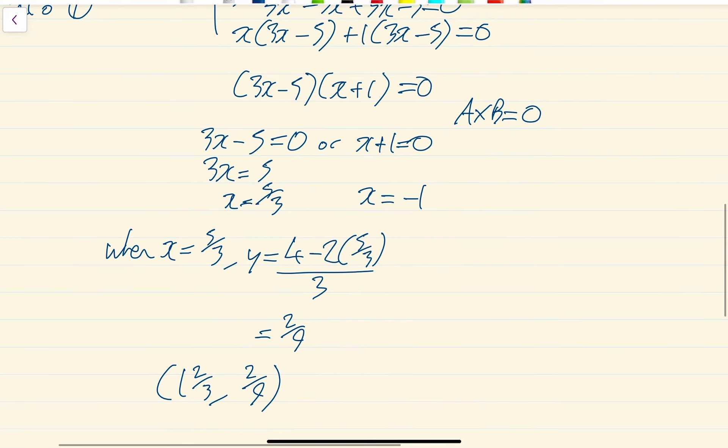And then the other one was when x equals minus 1, y is going to be equal to 4 minus 2 times minus 1 all over 3. And again, I'm just going to file that into my calculator. So 4 minus 2 times minus 1, and that is 6, and then divide by 3. That's a much nicer one, that just gives you 2. So my other coordinate is minus 1, 2.